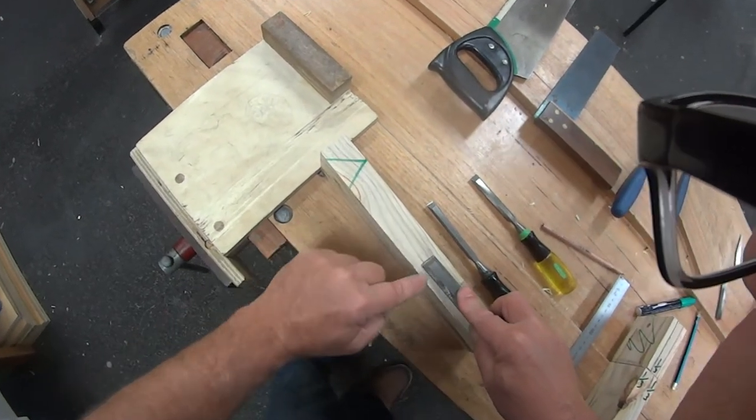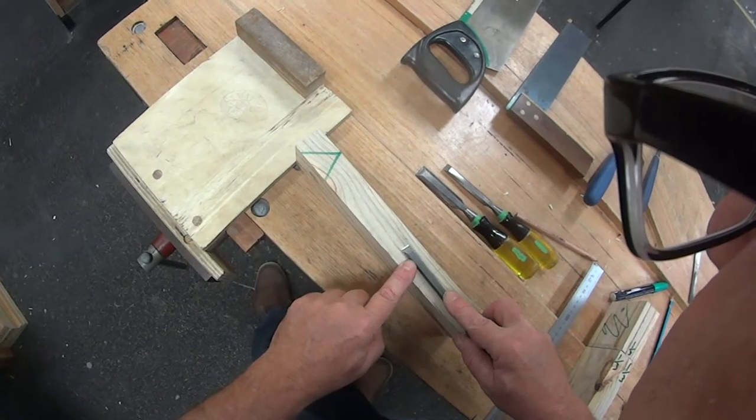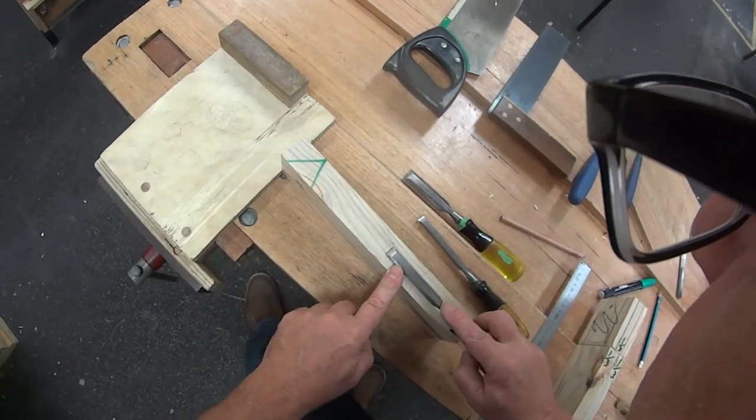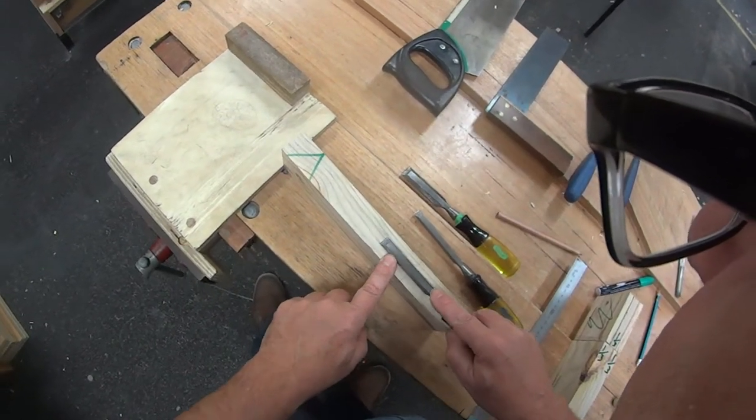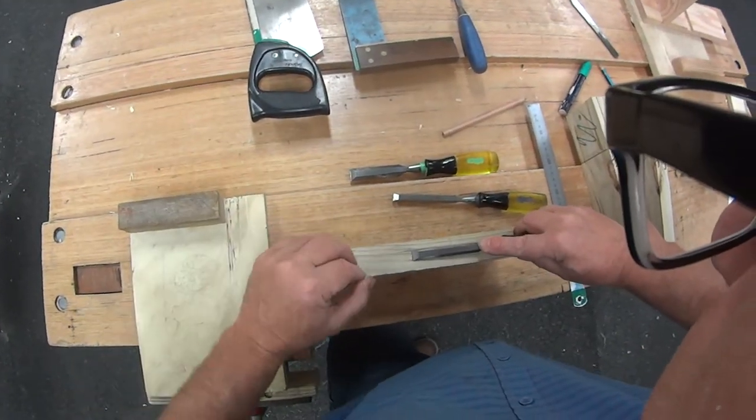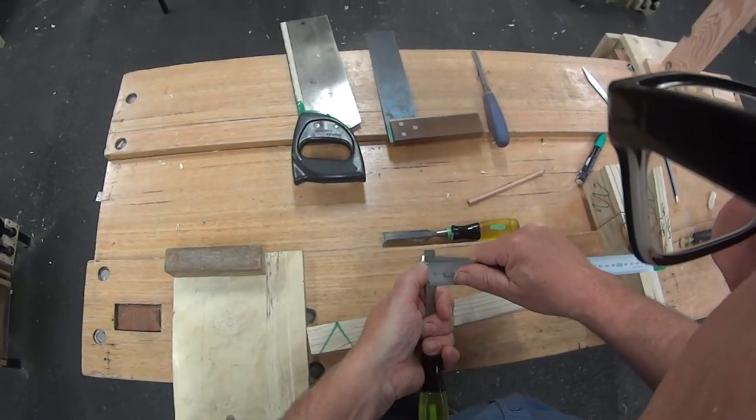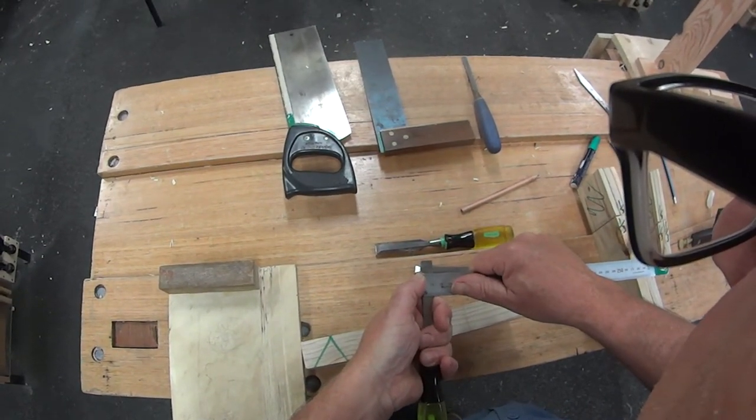That one's too wide, clearly it's too wide. That one is just a little bit too narrow, and just like Goldilocks, that one's just right. So we'll go with the one that's just right, as luck would have it. It's 11 and a half mil.